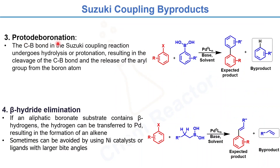The third byproduct from Suzuki coupling is protodeboronation. Here, the C-B bond in the coupling reaction undergoes hydrolysis or protonation, resulting in cleavage of the C-B bond, which releases the aryl group and forms aryl byproducts.